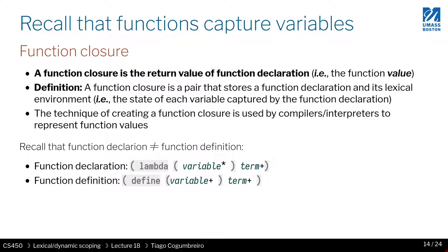The idea is that you have a runtime function allocated when you call it — a function that returns a new function. This new function, or instantiation of a function, always has a notion of some code and also some state, which is the values of the variables captured upon creation of this function. This is known as a function closure or a function value, where 'value' means when you evaluate a lambda you get a value.